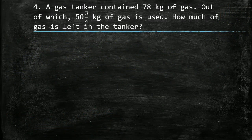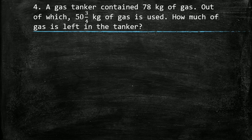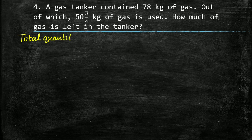Next question: a gas tanker contained 78 kg of gas, out of which 50 whole 3 upon 4 kg of gas is used. How much gas is left in the tanker? Whenever we have to find out how much quantity is left, we do subtraction. Total quantity of gas was 78 kg, and 50 whole 3 upon 4 kg of gas is used out of it. So to find the gas left, we will subtract 50 whole 3 upon 4 kg from 78 kg.